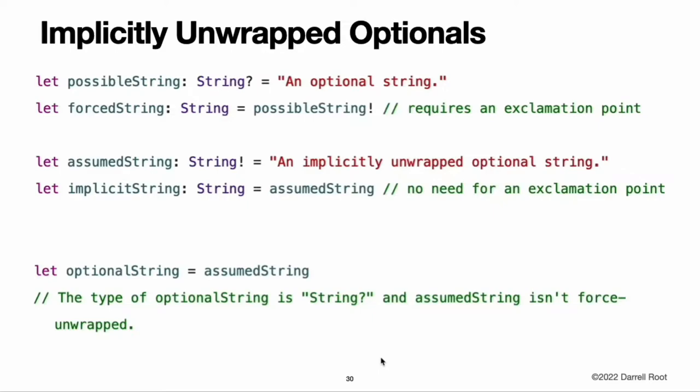Implicitly unwrapped optionals. As described above, optionals indicate that a constant or variable is allowed to have no value. Optionals can be checked with an if statement to see if a value exists, and can be conditionally unwrapped with optional binding to access the optional's value if it does exist. Sometimes, it is clear from a program's structure that an optional will always have a value after that value is first set. In these cases, it is useful to remove the need to check and unwrap the optional's value every time it is accessed, because it can be safely assumed to have a value all of the time.